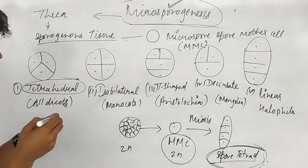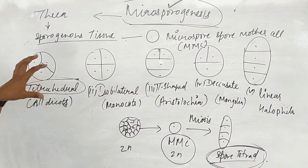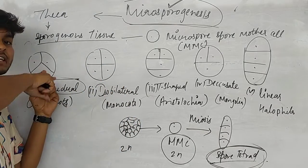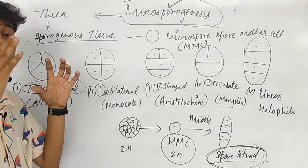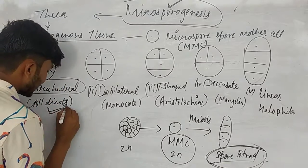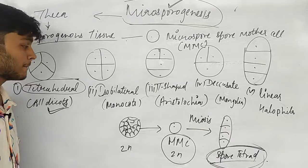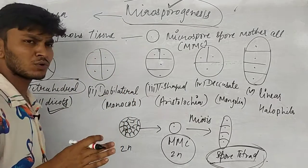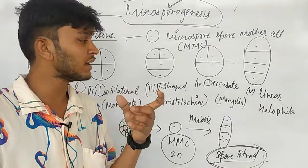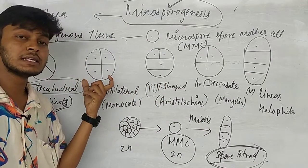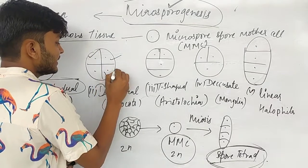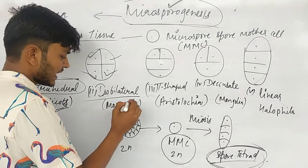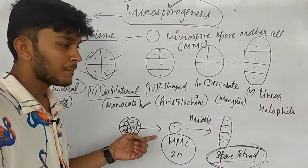In a tetrahedral spore tetrad, three spores are visible from the front and one microspore is at the back. In an iso-bilateral spore tetrad, all four microspores are arranged so that all four are visible from the front. Iso-bilateral arrangement is found in monocots.